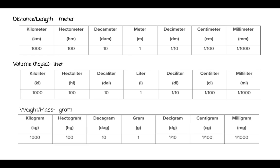And then for weight or mass, our prefixes are still the same — kilo, deci, centi, milli — but we put the base word 'gram' at the end because we're talking about measuring weight or mass. We're going to focus on weight and mass today, so our base unit is always going to be the gram.